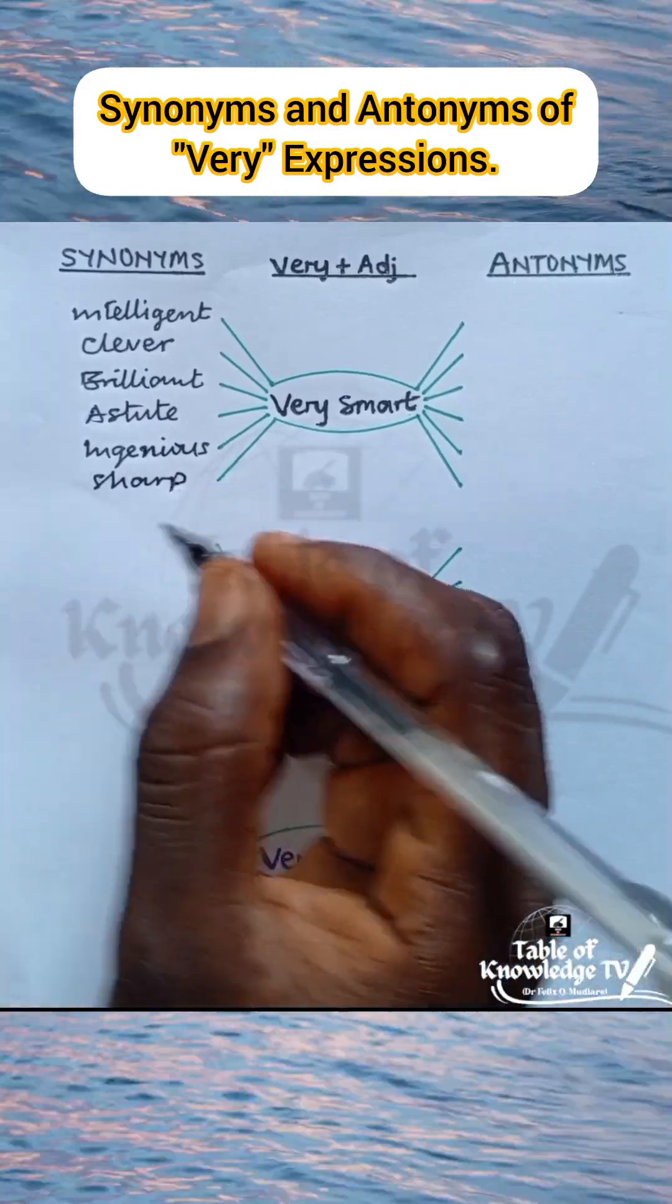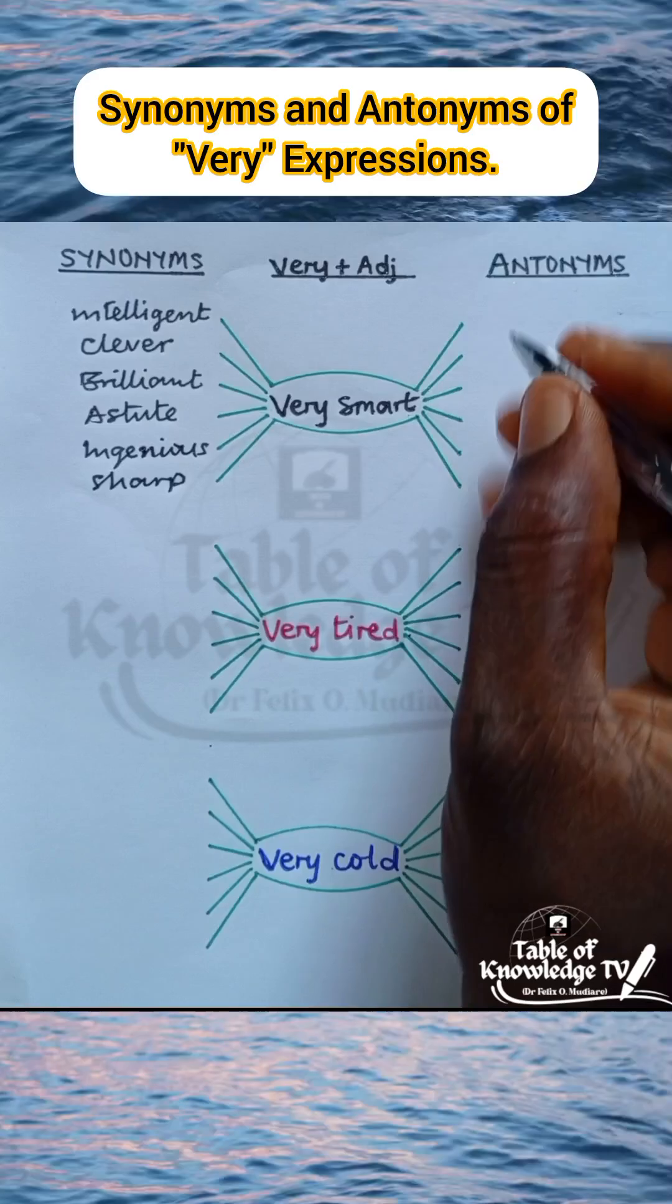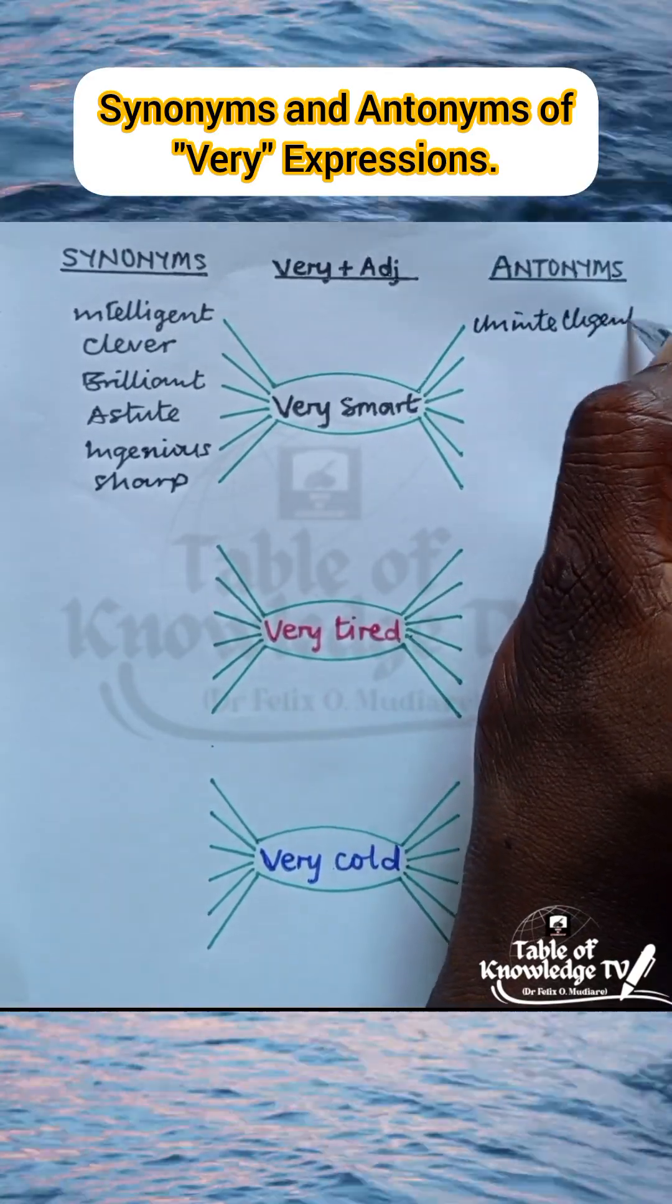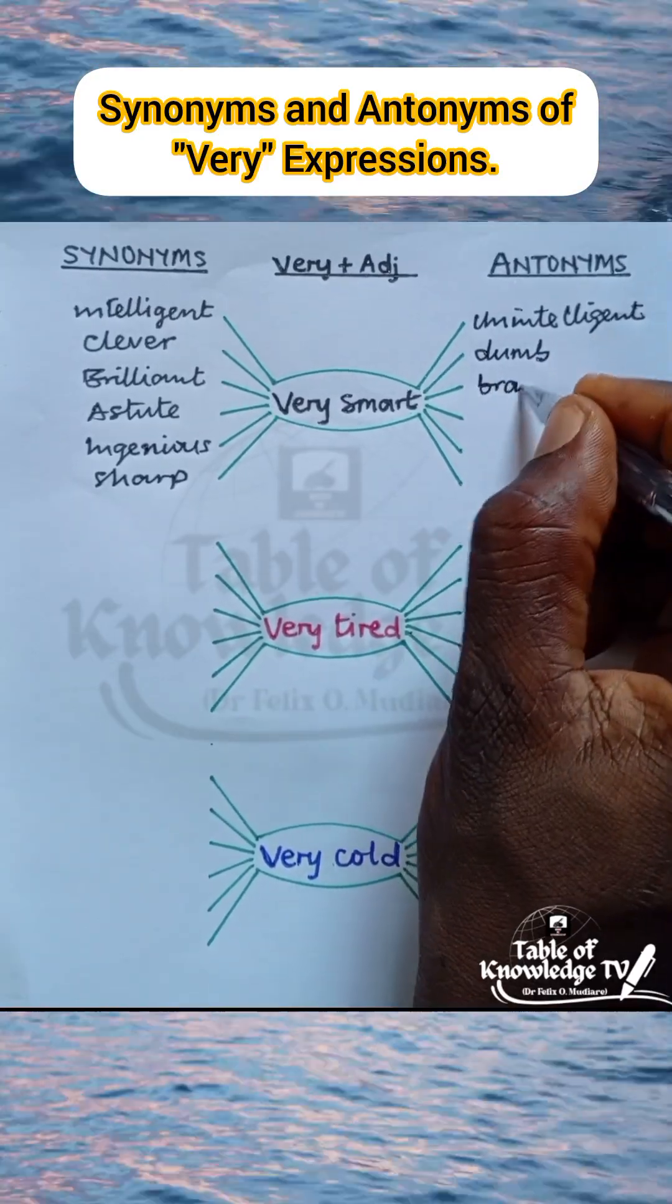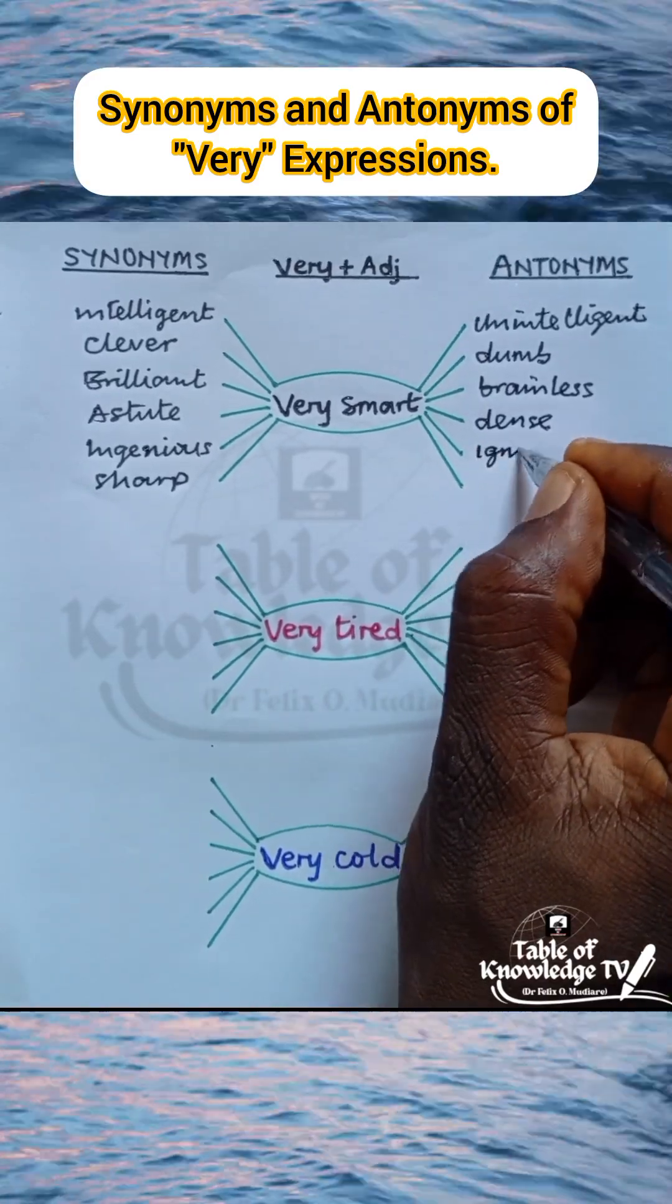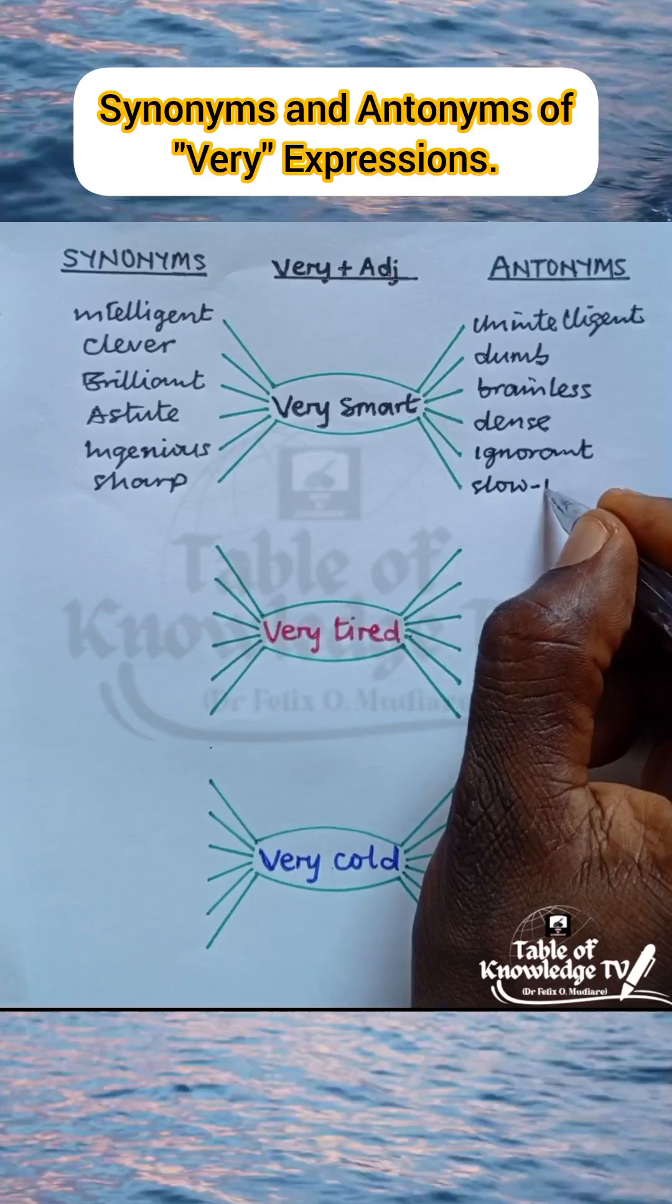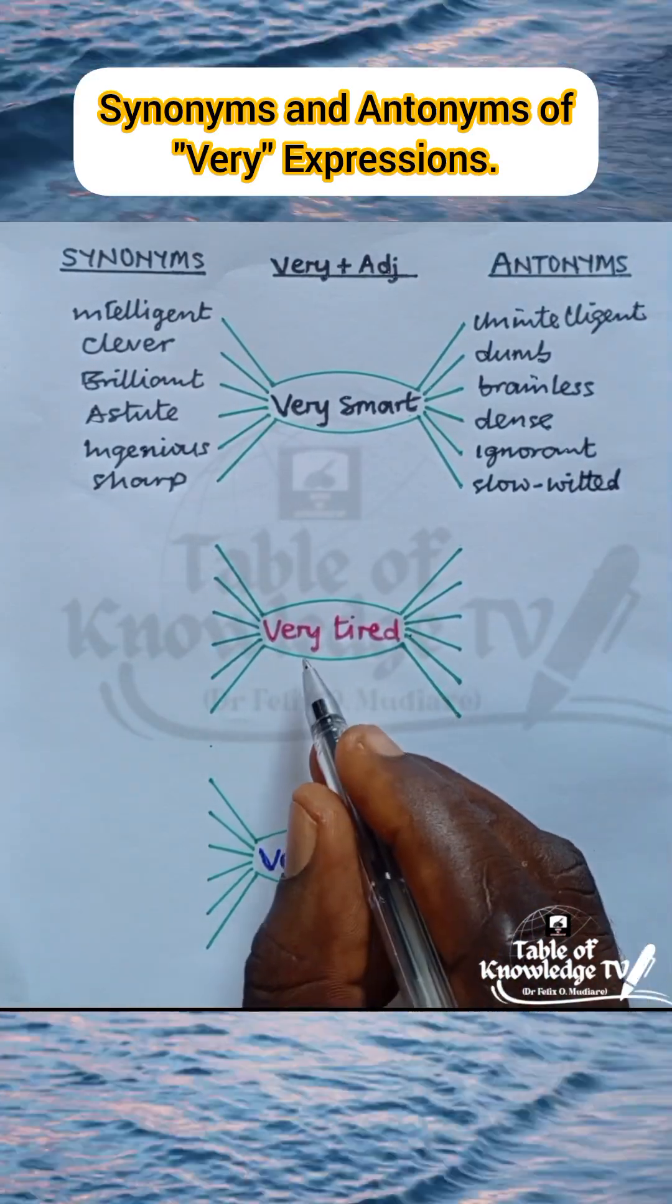Next we look at the antonyms of very smart. These include unintelligent, dumb, brainless, dense, ignorant, slow-witted.